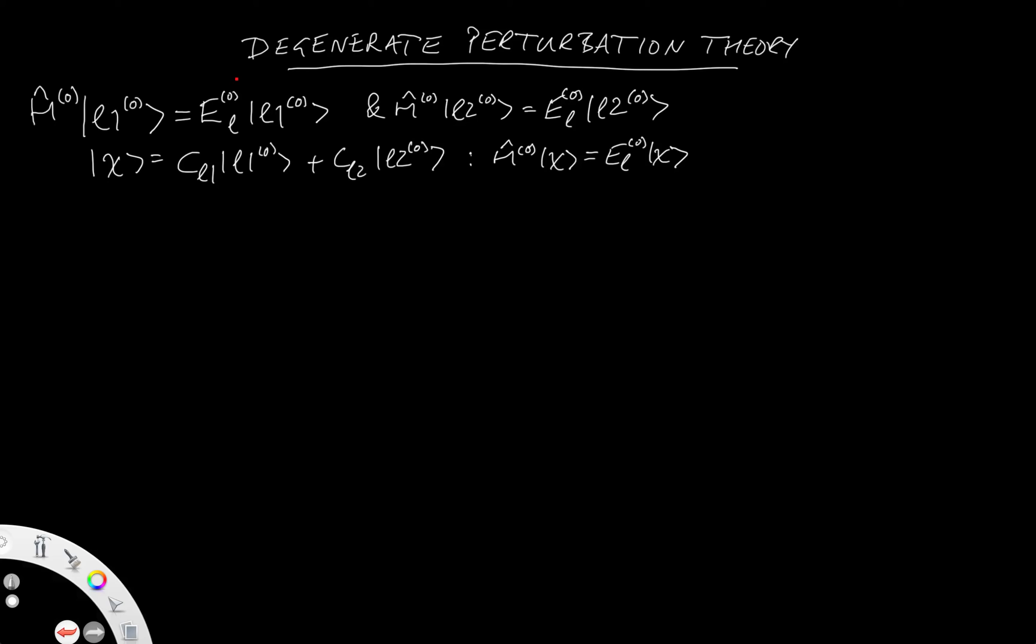When it comes to perturbation theory, however, it is important for two reasons. First of all, since the two states share an energy, the standard way of calculating the first-order wave functions fails because it divides by the difference between the energies. So that's going to cause a problem. And secondly, we need to know exactly which states we end up with after perturbing.